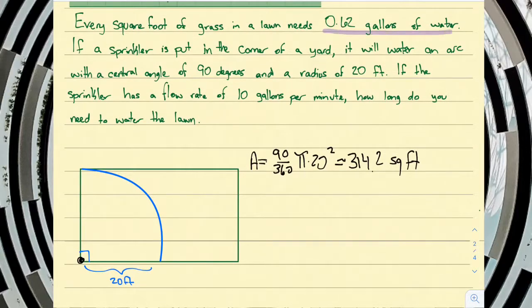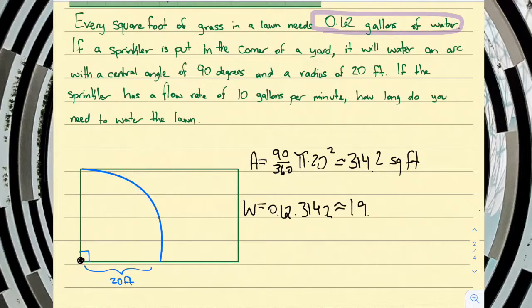Now, if we go back up to the problem, it says that we need 0.62 gallons of water for every square foot. So, we can take our area and multiply it by 0.62. So, we have 0.62 times 314.2 will tell us how much water we need, which comes out to be about 194.8 gallons of water we need. So, we need about 195 gallons of water put out onto our yard.